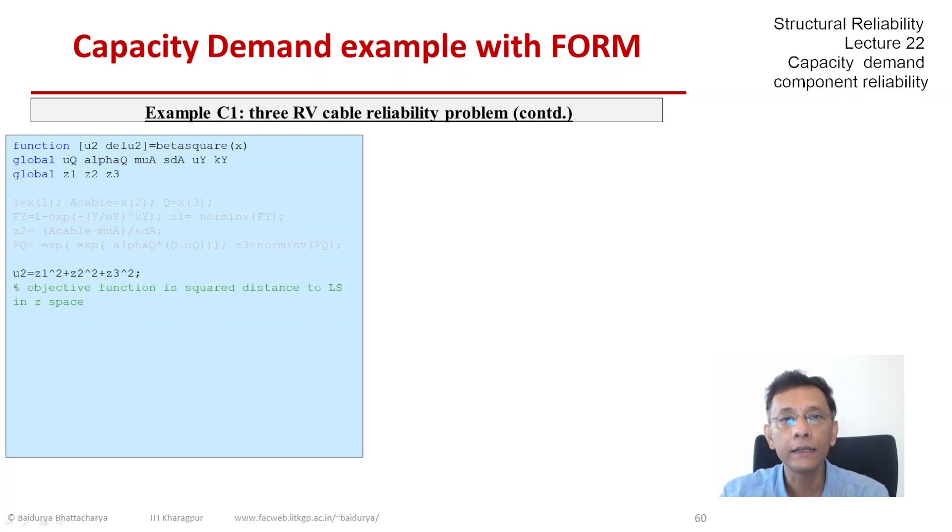Now as additional information which would help the optimization, I would provide the gradients because I have the ability. As I said, the partial of the objective with all the x's—x1, x2, x3—I'm going to use the chain rule of differentiation, and they would be given as you see here.